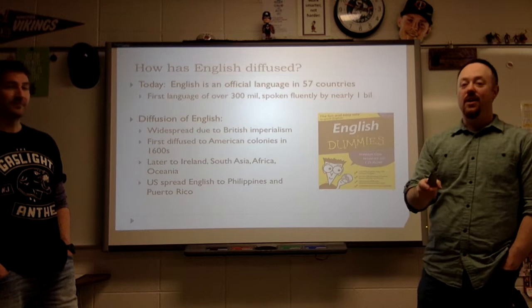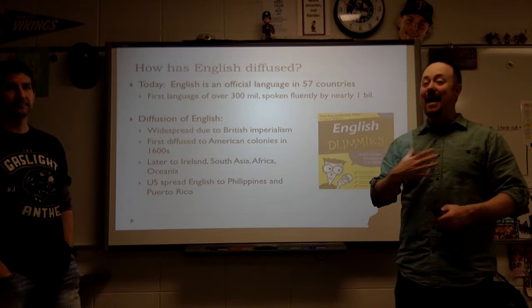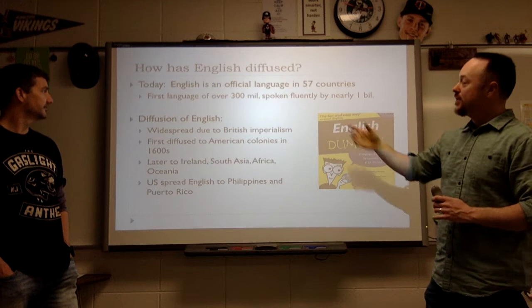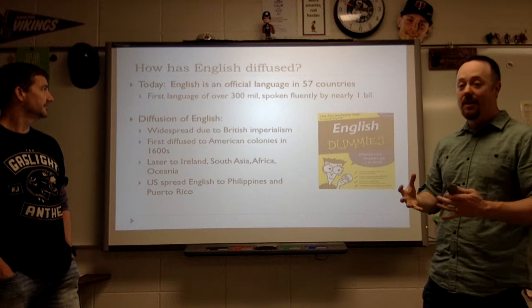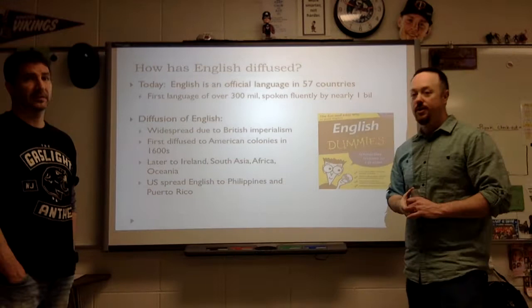How is English diffused? We put another video on there if you want to look at the diffusion of English more closely. Today, English is the official language in 57 countries — that does not include the United States, which does not have an official language. English is the first language of over 300 million people and is spoken fluently by over a billion people worldwide, largely due to migration and colonialization by Great Britain.